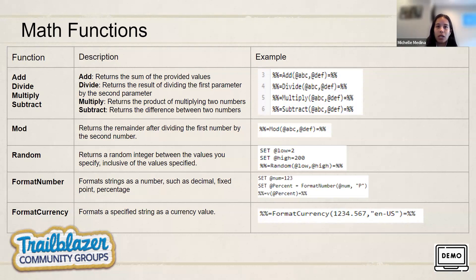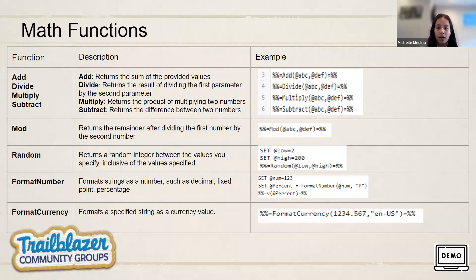Format number returns or formats a string to a number, such as a decimal, fixed point, or percentage. For this example, we're using it to return a percentage. If variable NUM equals 123 and we format it into a percentage, it would return 12,300%. Similarly, format currency formats a string into a currency value. Given the number 1234.567 followed by the ISO locale code for the currency unit, it would return $1,234.57 in US dollars.